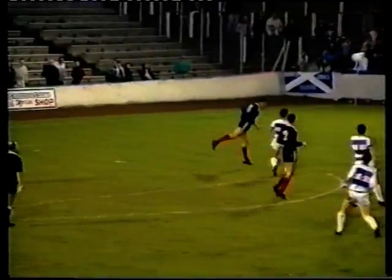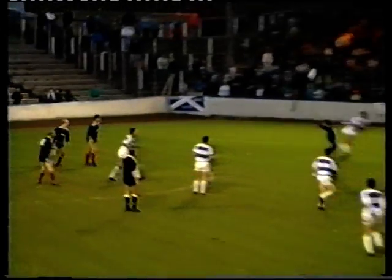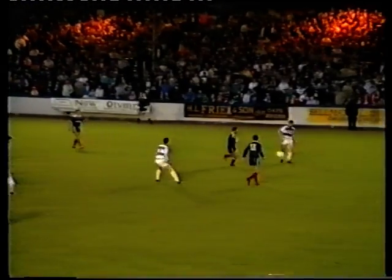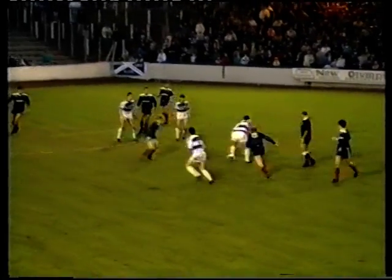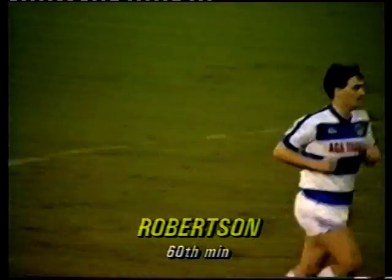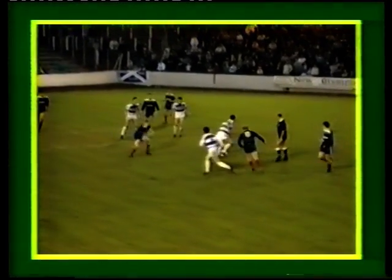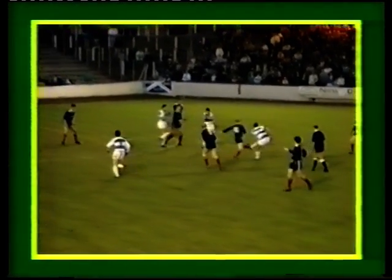Free kick to Morton. Falkirk's defence really has stood firm today. Morton trying to get something going — here's Doug Robertson. How about that for a reply! It's only Robertson's second goal of the season, but he'd be proud of this one — just looks up and sees that Marshall is off his line. 3-1.